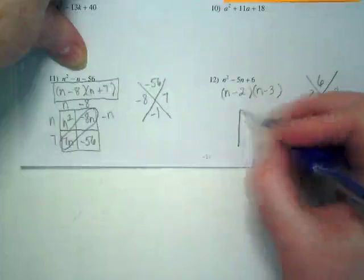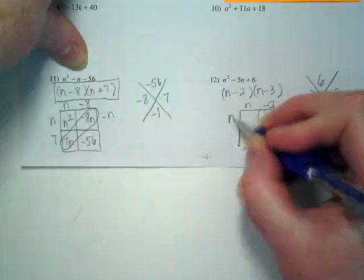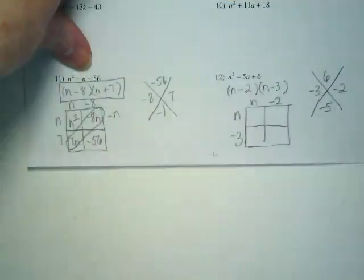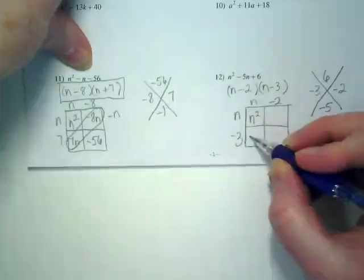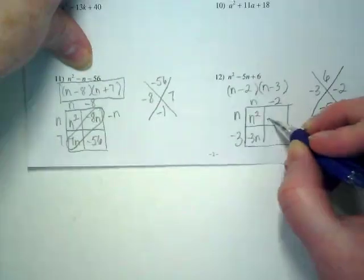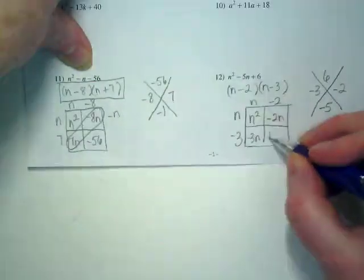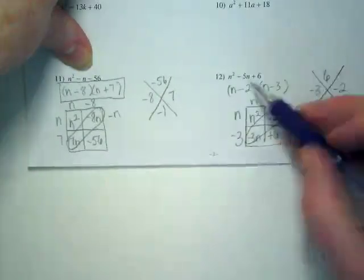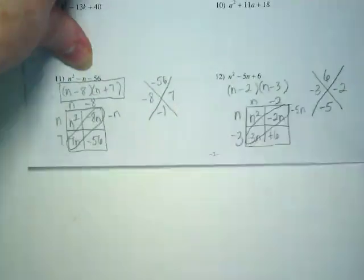And then we are going to do our final step and check. I want you guys multiplying with me. n times n is n squared. Negative 3 times n is negative 3n. Negative 2 times n is negative 2n. And negative 2 times negative 3 gives me positive 6. Combine my like terms. I'm getting negative 5n. That's my center term. Positive 6 is my last term. n squared is my first term. So it checks.